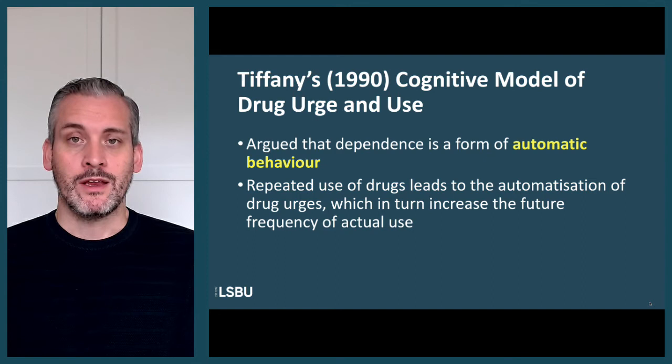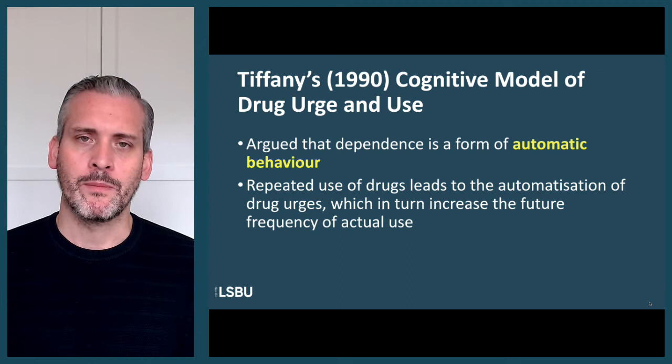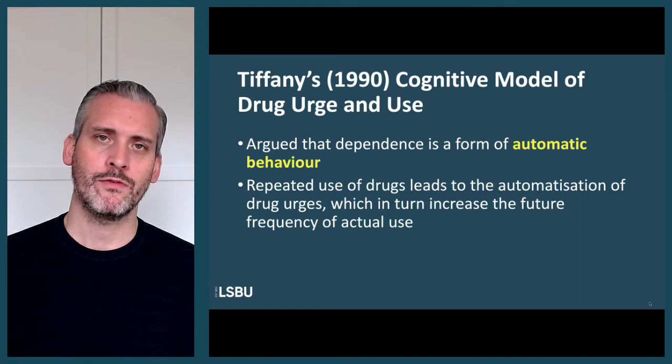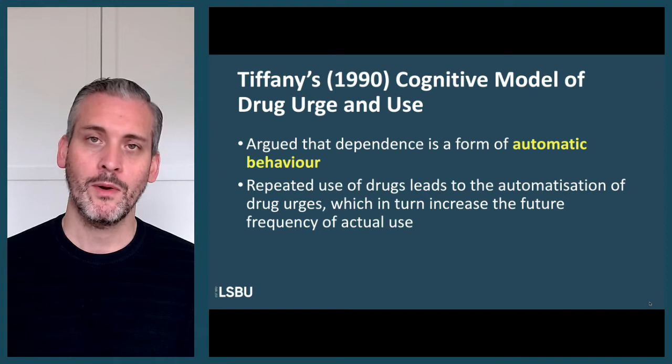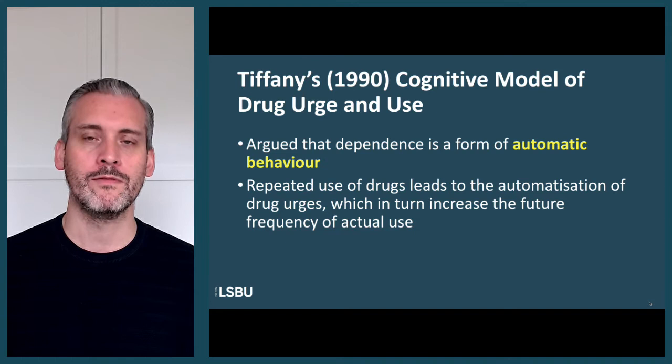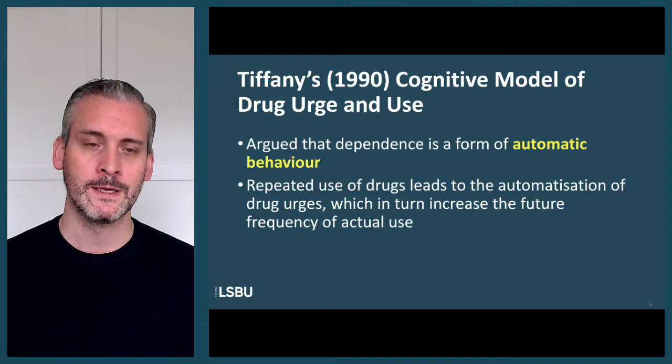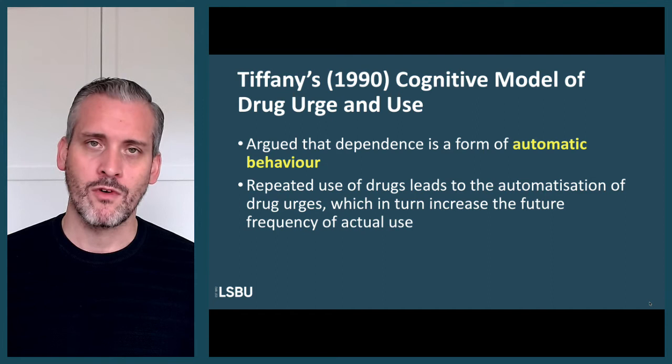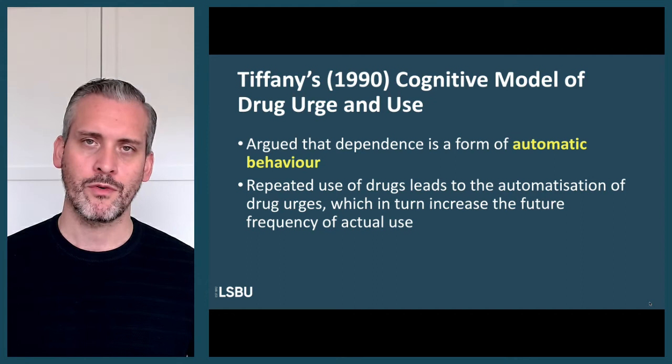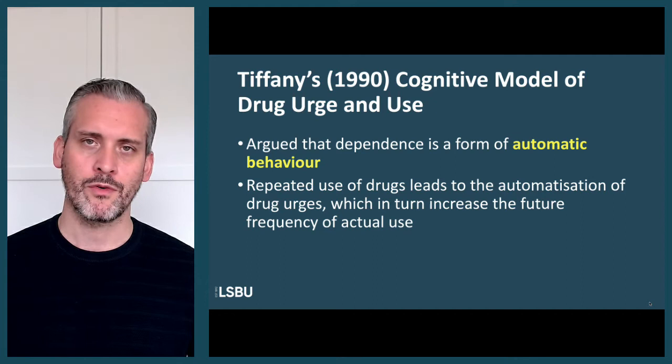Steven Tiffany's 1990 work, though now quite old, has been very influential in thinking about what craving is. Tiffany argued that dependence is a form of automatic behaviour — effectively the development of a habitual pattern of behaviour that becomes automated over time, like many behaviours. Tiffany uses the example of learning to ride a bike: you have to put effort in to begin with, but over time it becomes automated. The repeated use of drugs leads to the automatisation of drug urges, increasing the frequency of use — urges created by past history of use that promote prospective future use.